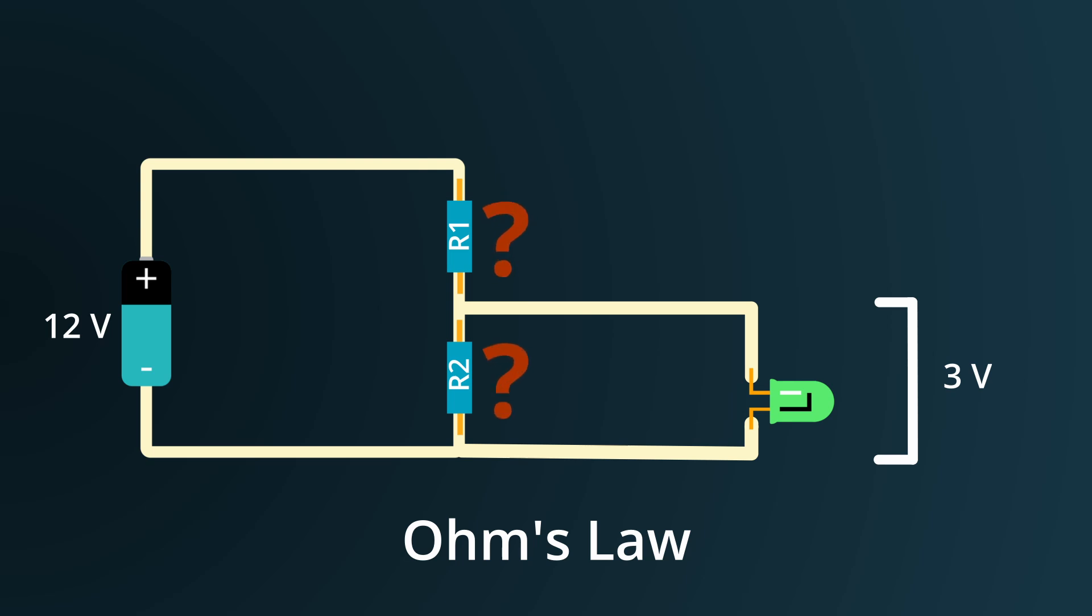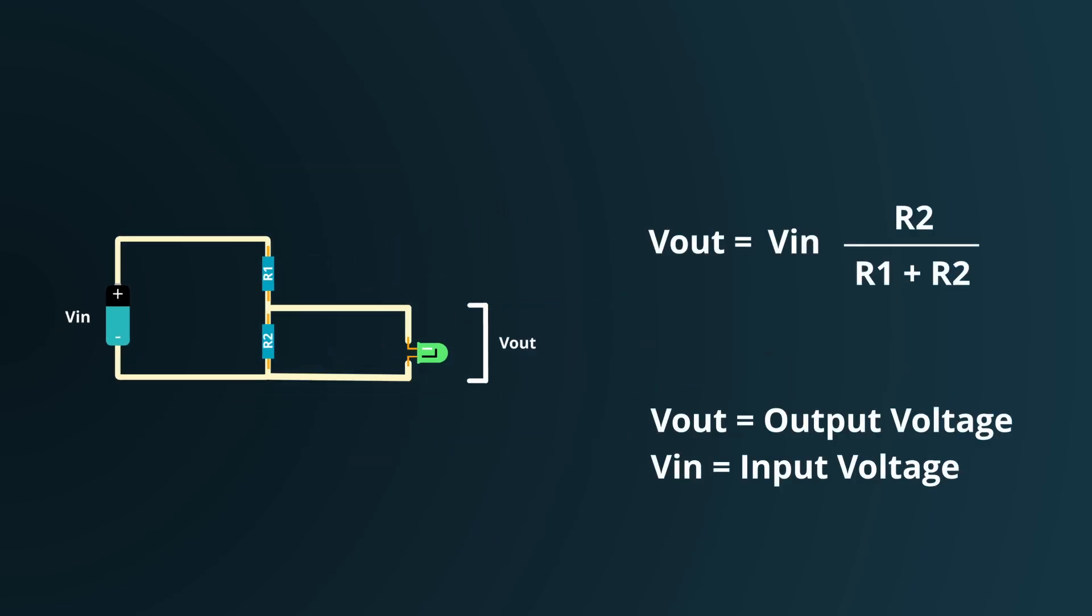While Ohm's law is a fundamental principle that governs how voltage, current, and resistance are interrelated, for this specific task we need something a bit more tailored. Enter the voltage divider equation. This equation is specifically crafted to tell us exactly how much voltage will be across one of the resistors when we know the input voltage and both resistance values. Vout is the voltage across R2.